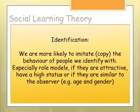Identification is a key factor of social learning theory. We're more likely to copy the behaviour of people we identify with, especially if they are role models — someone we look up to who is attractive or has high status. That's why people are more likely to imitate celebrities, or people who are similar to ourselves in age or gender.